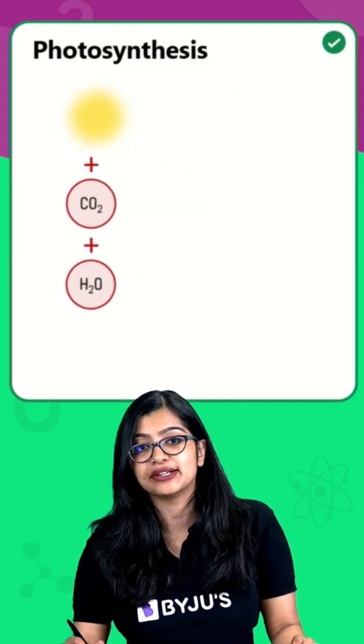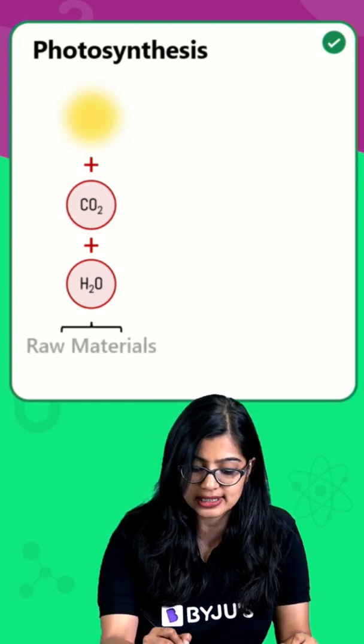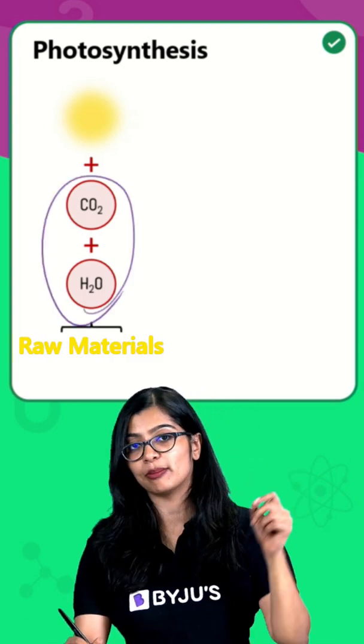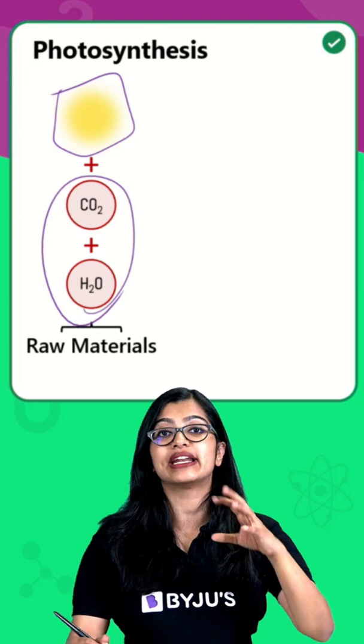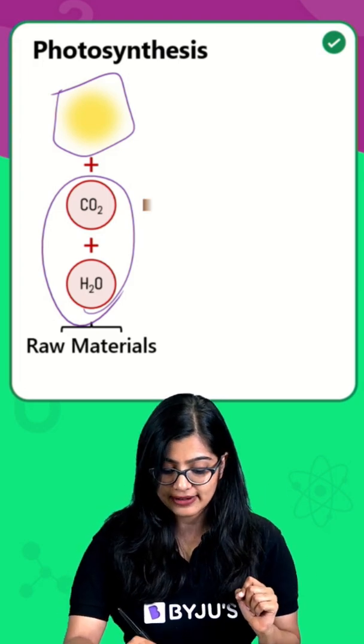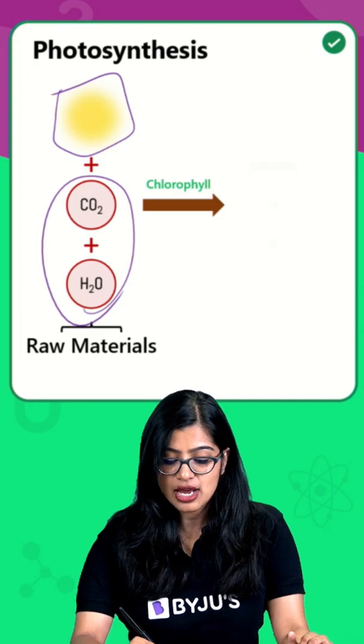If we talk about the raw materials, carbon dioxide and water are the raw materials, while sunlight is an essential need for the process. In the presence of chlorophyll, we get the end products.